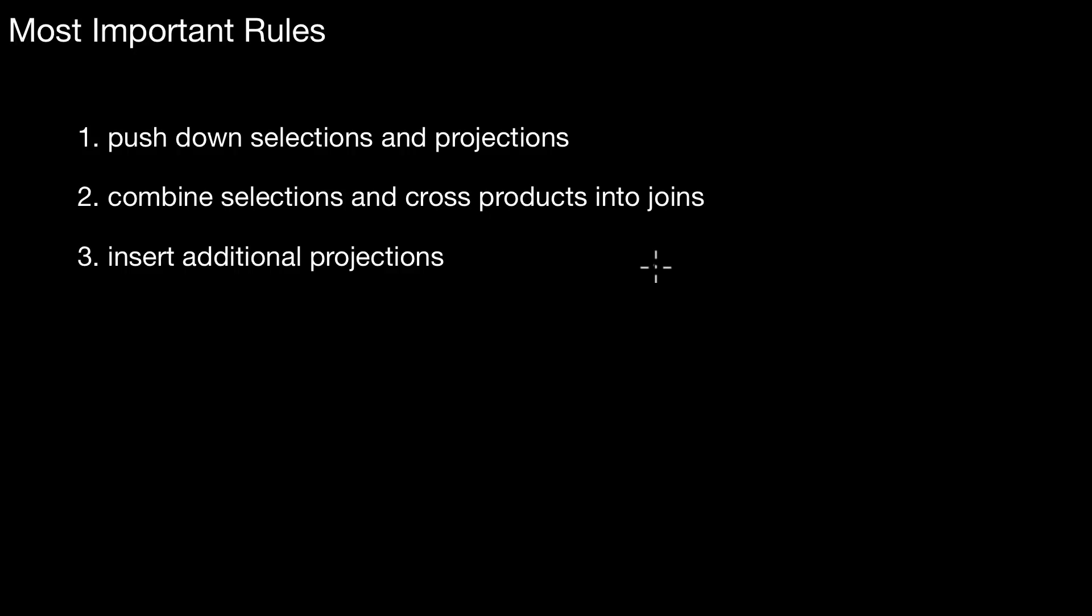There are a number of those rules that can be applied. This is just the three most important ones I already explained with the example above. You will try to push down selections and projections as much as possible. That's the first rule. The second is, you combine selections and cross products into joins. As cross products have a square complexity, that is not acceptable for big input sets. You need to do something better, and those are the joins we talked about when talking about query processing algorithms. And you also insert additional projections whenever possible. This is like a side effect of step one.